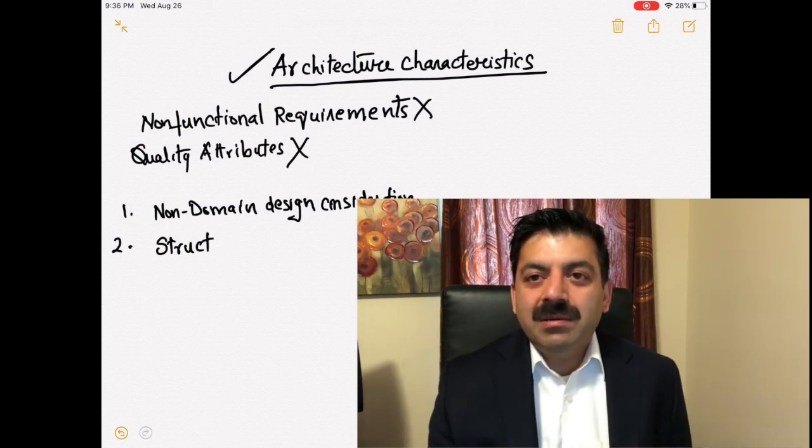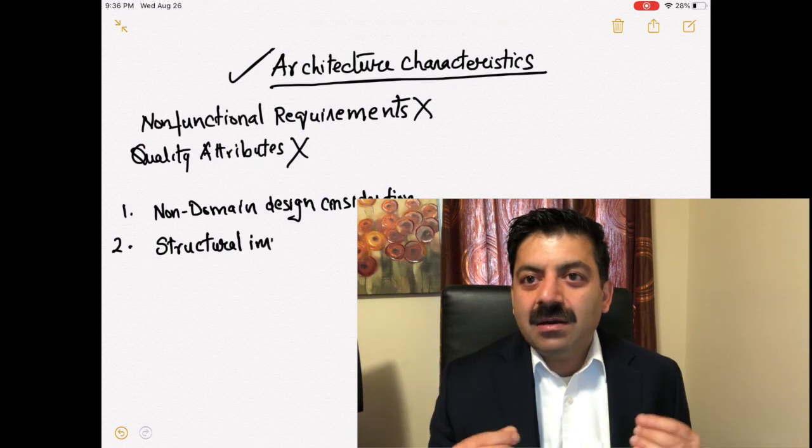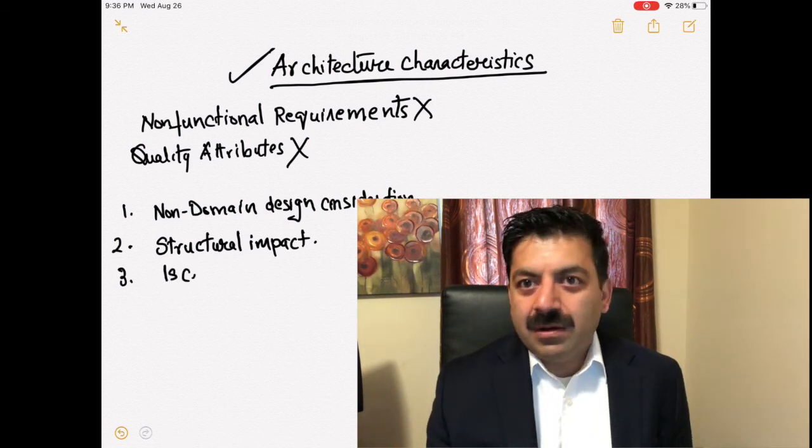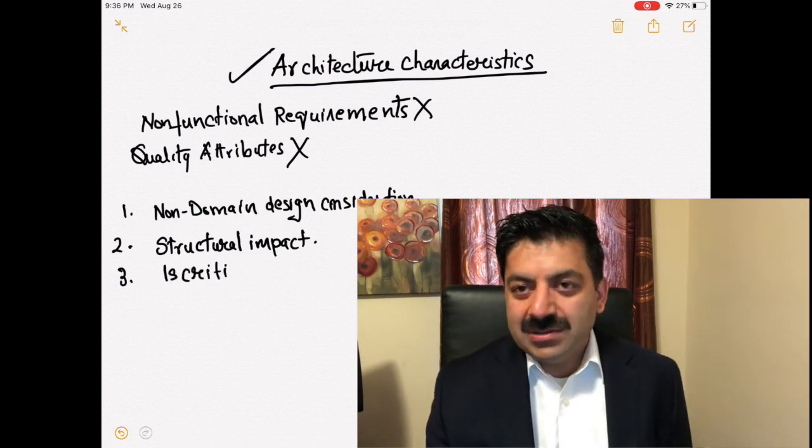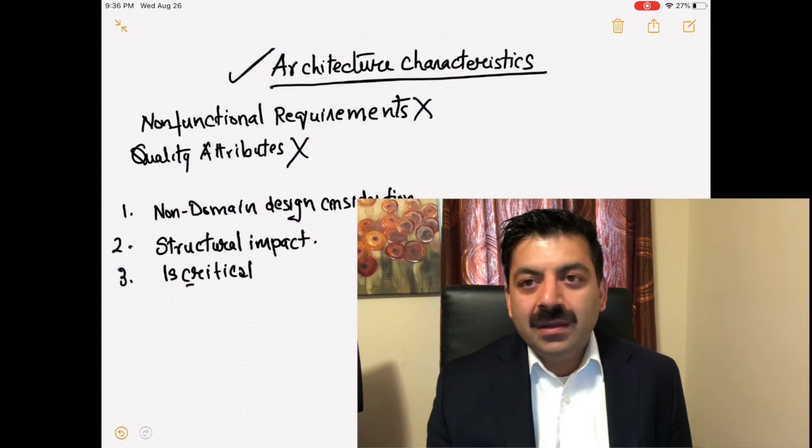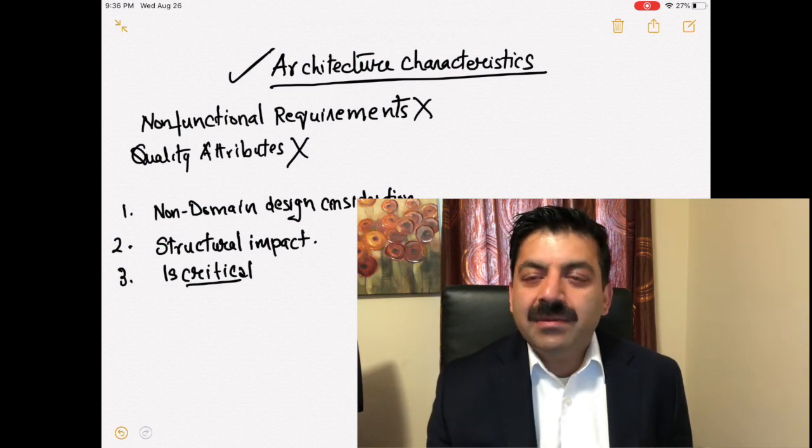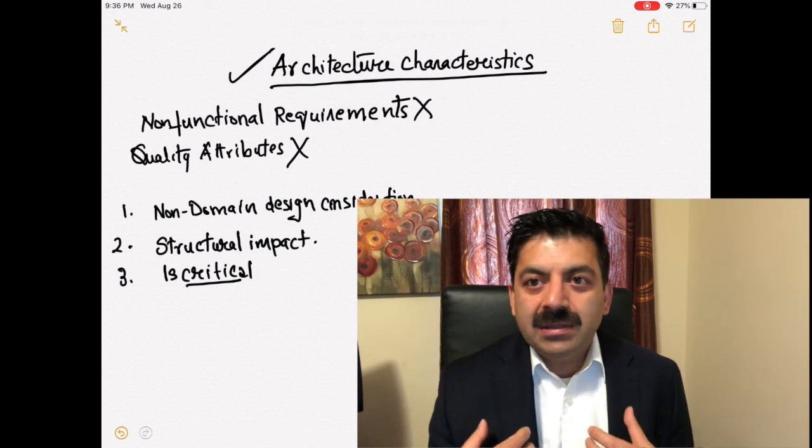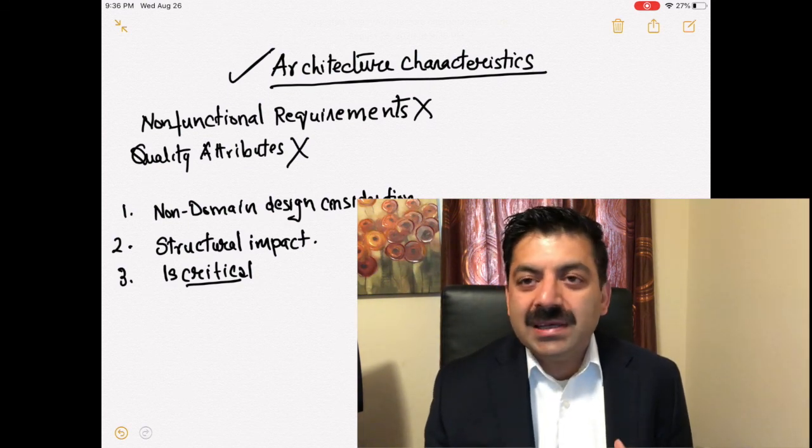They came up with three parameters for how you say that this is an architectural characteristic. These three parameters are: it's non-domain design consideration like performance, it has structural impact, for example security can impact the whole structure of your code, and it's critical.